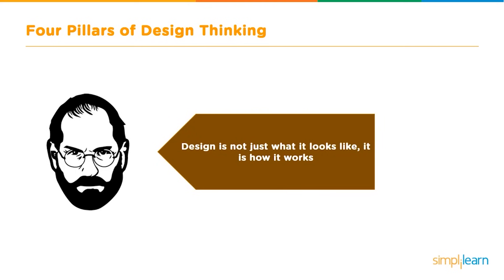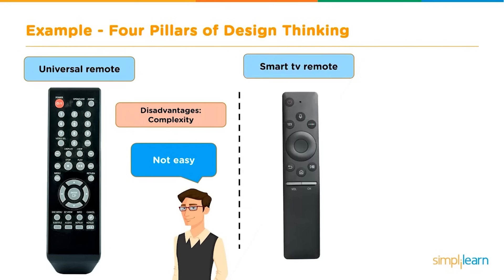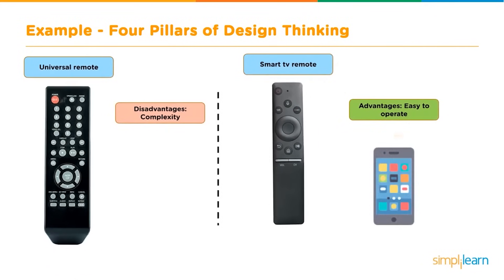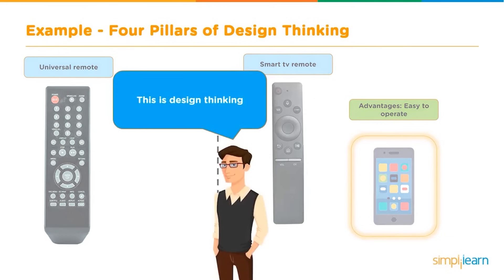Consider the evolution of the TV remote control. Earlier, people used universal remotes, which had many buttons making them complex and difficult to use. Then came smart remotes, which featured only the major keys — easy to operate — and could even be controlled via mobile phones. This evolution was accomplished with the help of design thinking. The design thinking process serves as a strong foundation to formulate reliable strategies that result in good products.